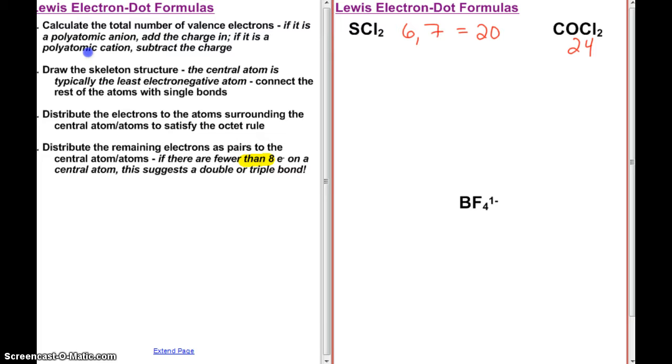And while we're doing that, for the BF4-1, I've got 7 from each fluorine, so that's 28. I've got 3 from boron, so that's 31, and then I add in the negative 1. So I will have 32 valence electrons there.